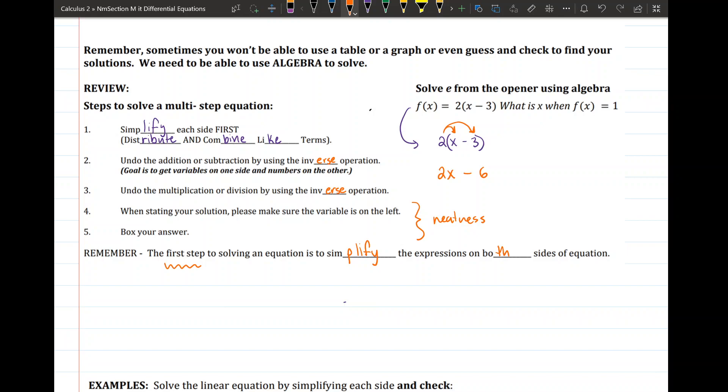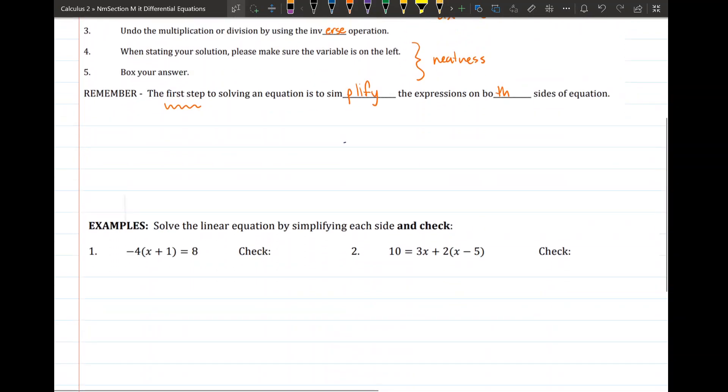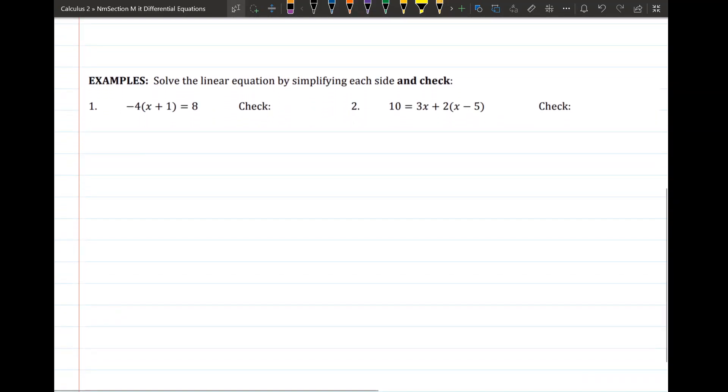All right so let's look at an example here. So we're going to solve these and then we have some space to check our work. So again I'm going to simplify and I see that I have an expression in parentheses being multiplied by a constant outside which means I'm going to have to distribute. So I take that negative 4 and I multiply it by every term on the inside so I'll get negative 4x minus 4 is equal to 8.